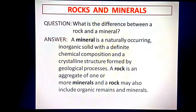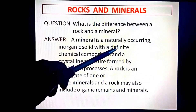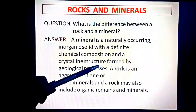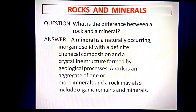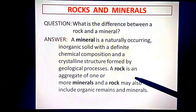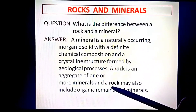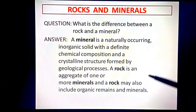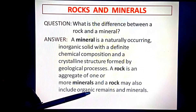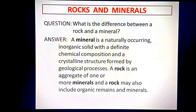What is the difference between a rock and a mineral? A mineral is a naturally occurring inorganic solid with a definite chemical composition and a crystalline structure, formed by geological processes — that is, natural processes that take place on the Earth's crust. Whereas a rock is an aggregate of one or more minerals, and a rock may also include organic remains. Minerals are naturally occurring inorganic solids, whereas rocks can contain organic remains.